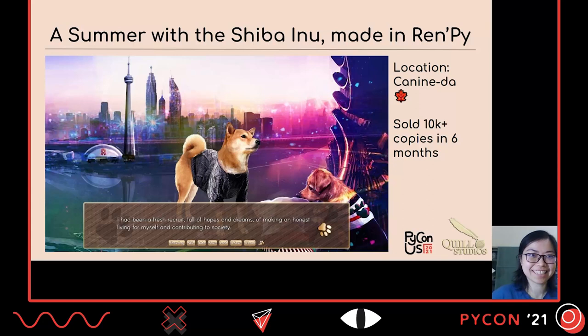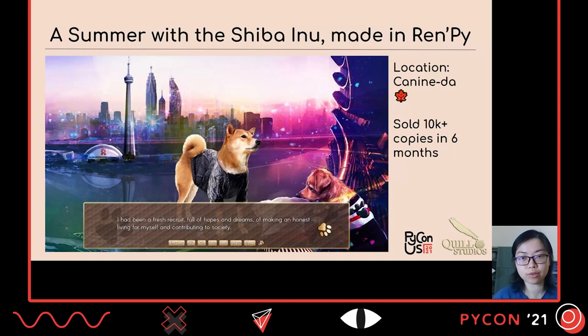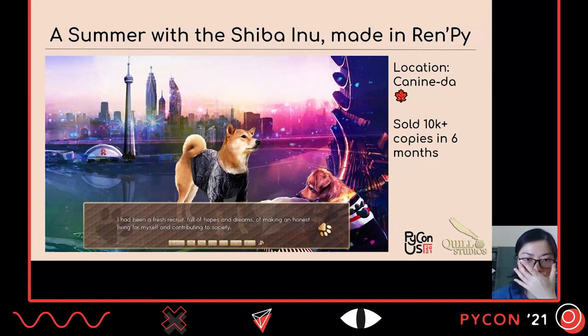So what's this game? It's called A Summer with the Shiba Inu, and it's a visual novel made in RenPy. It shipped on all main OSs — Windows, Mac OS, Linux — as well as all consoles at the time: Switch, Xbox One, and PS4. On the console launch, in the first six months it sold around 10,000 copies, which was really more than I ever expected. It's all thanks to playing around with RenPy and spending a massive amount of time writing games.